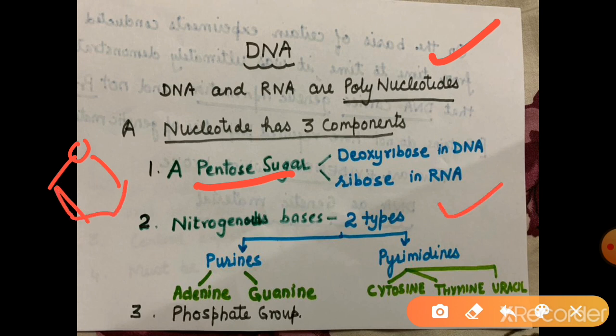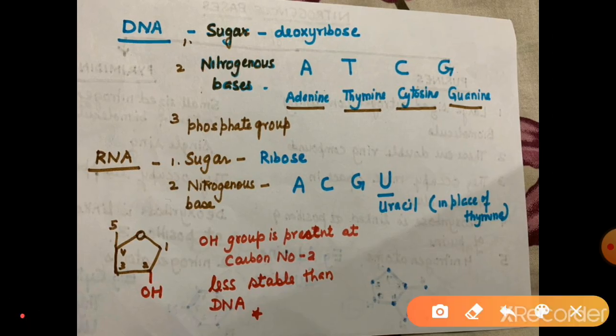The second component is a nitrogen base. There are two classes: purines and pyrimidines. Purines are adenine and guanine. Pyrimidines are cytosine, thymine and uracil. The third important component of a nucleotide is the phosphate group. Both DNA and RNA are polynucleotides — they are polymers of nucleotides. Most living forms have DNA as their genetic material, but there are some viruses whose genetic material is RNA.